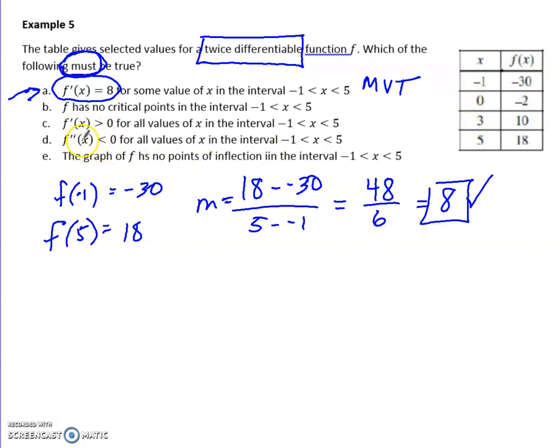This says the second derivative is negative, which means it would be a concave down scenario. Well, again, I don't know that from this. There's no way for me to know just from four points. And the graph has no points of inflection. Well, if I don't know anything about the second derivative, I certainly don't know anything about points of inflection. So the only thing I could talk about was that first one.